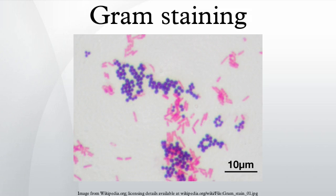In a Gram stain test, Gram-positive bacteria retain the crystal violet dye, while a counter stain added after the crystal violet gives all Gram-negative bacteria a red or pink coloring. The Gram stain is almost always the first step in the identification of a bacterial organism. While Gram staining is a valuable diagnostic tool in both clinical and research settings, not all bacteria can be definitively classified by this technique.